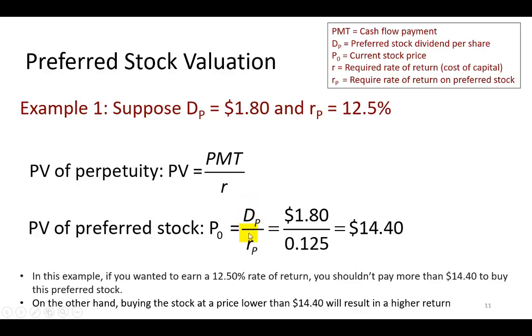and the rate of return required on a preferred stock is defined to be RP, plugging in and playing, we find the price to be $14.40.